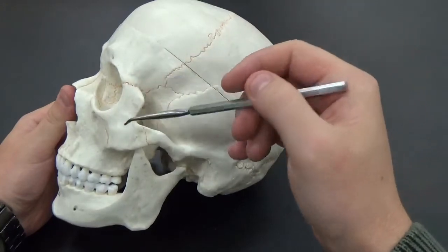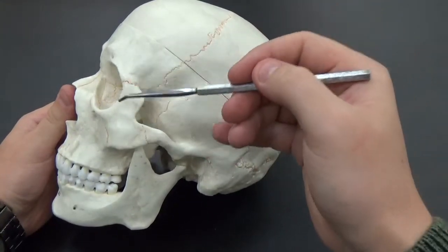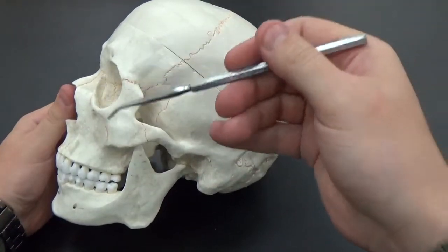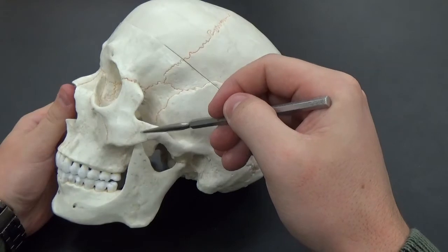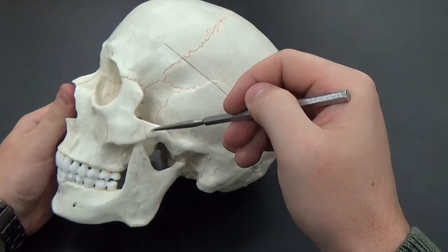And the zygomatic bone. Now our zygomatic bone has three processes, so you can think of these processes as named after what they touch, not what bone they're on. So this projection here, this is the temporal process, because it touches the temporal bone.